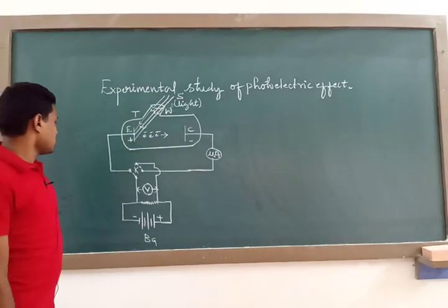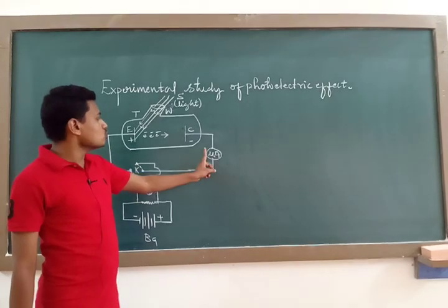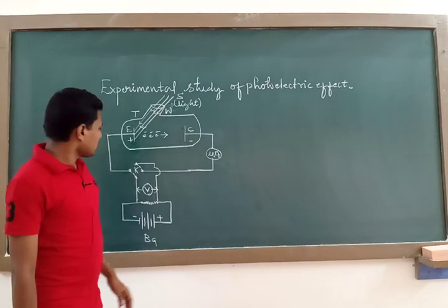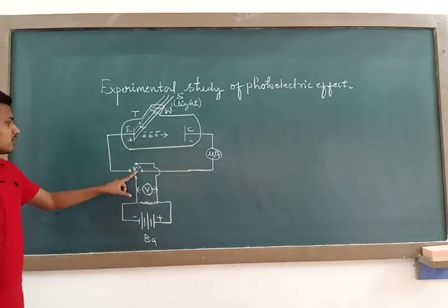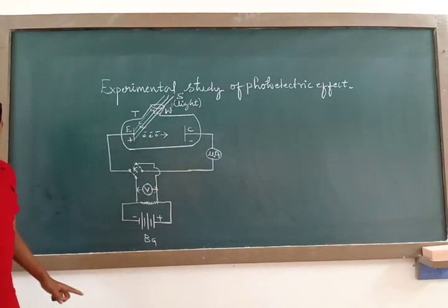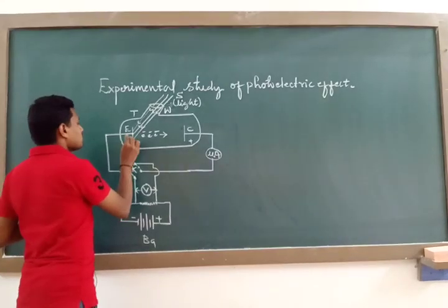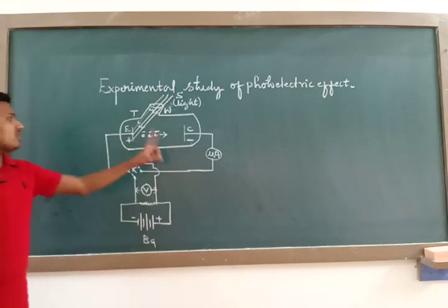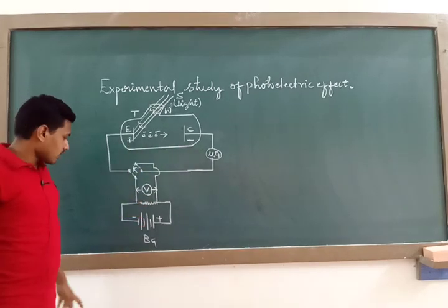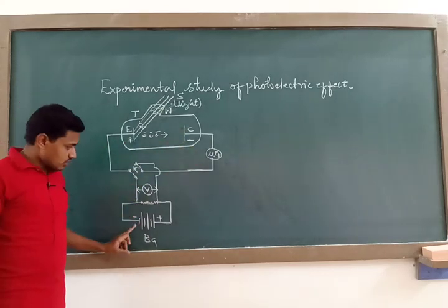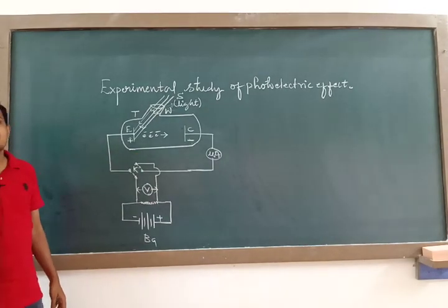In the experimental setup, there is an emitter plate and a collector plate. A microammeter is introduced in the circuit in order to record or note the photoelectric current. There is also a device known as a commutator, represented by the letter K. This commutator helps to reverse the potential between the emitter and collector — I can make the emitter negative and the collector positive, or vice versa. A voltmeter is introduced to note the potential between the emitter and collector, and a battery supplies the potential difference between the emitter and collector plates.